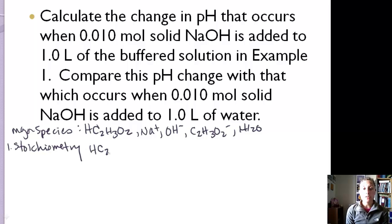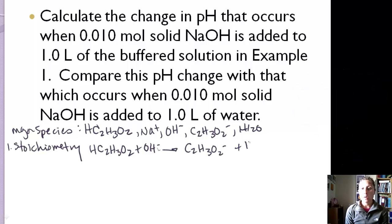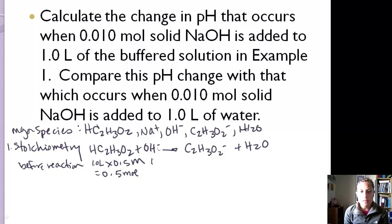Since it's a strong base, we have HC₂H₃O₂ plus OH⁻ going to completion to give our acetate ion and water. Before the reaction occurs, we have one liter of our buffered solution with 0.5 molar acetic acid and 0.5 molar salt, so 0.5 moles of each initially. Our OH⁻ is starting with 0.010 moles of NaOH, and we have 0.5 moles of the salt from one liter of the 0.5 molar buffered solution.